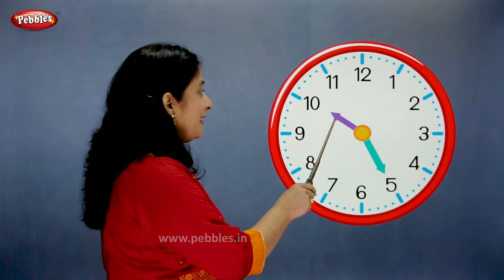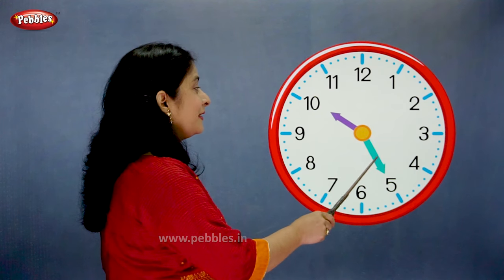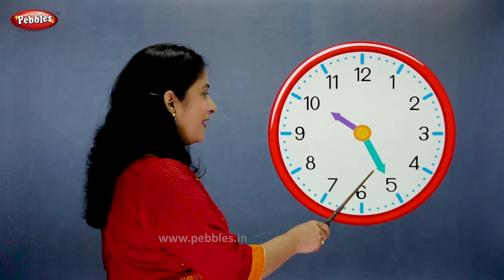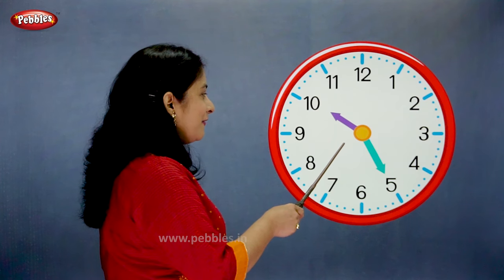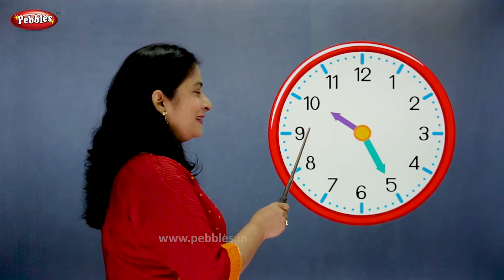The hour hand is on 10. The minute hand is on 5. So what is the time? Come on, tell me fast. Correct — the time is 25 past 10.